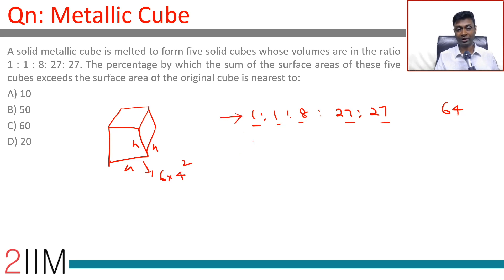These are the five small cubes. They will have side of the cube equal to 1, 1, 2, 3, 3. So area would be 6 into 1 square plus 1 square plus 2 square plus 3 square plus 3 square.